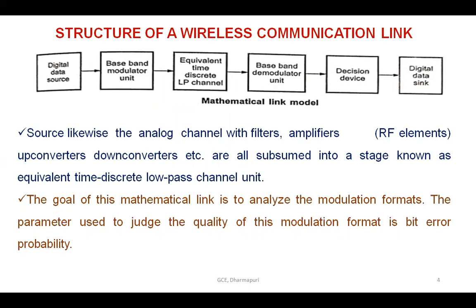The analog channel components such as filters, amplifiers, up-converters, and down-converters are all combined into a stream known as the equivalent time-discrete low-pass channel. The goal of this mathematical link is to analyze the modulation formats. The parameter used to judge the quality of a modulation format is the bit error rate (BER).